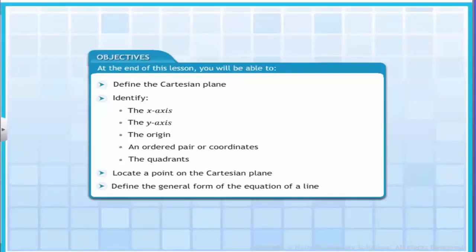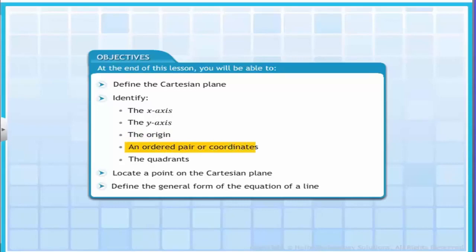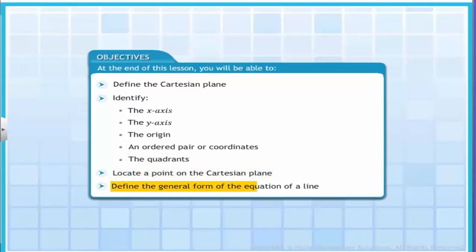In this lesson, you will learn about the Cartesian plane. You will also learn how to use this plane to plot points. At the end of this lesson, you will be able to define the Cartesian plane, identify the x-axis, the y-axis, the origin, an ordered pair or coordinates, and the quadrants. You will also locate a point on the Cartesian plane and define the general form of the equation of a line.